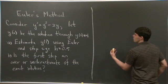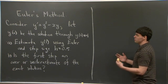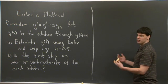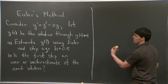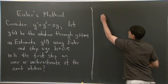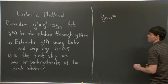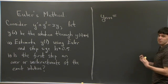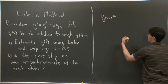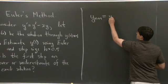So specifically, what we do is we take the left-hand side, the derivative, y', and we approximate it using a very simple finite difference formula. So if I take y' and approximate it as (y_{n+1} - y_n)/h, where h is the step size,